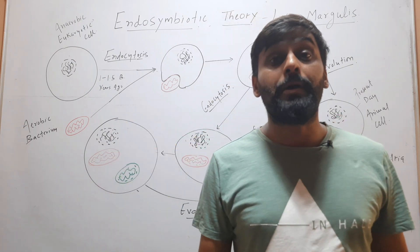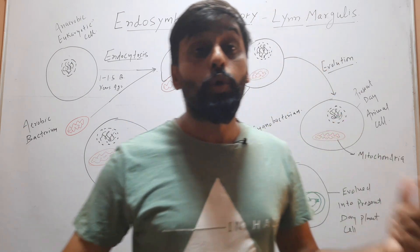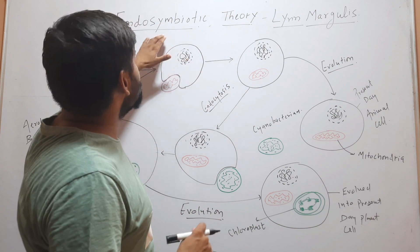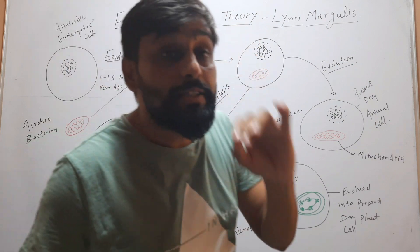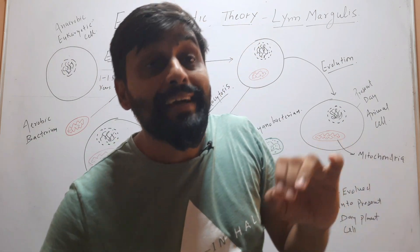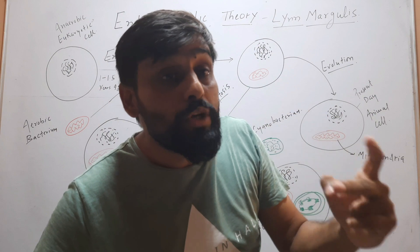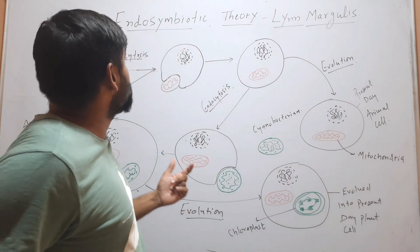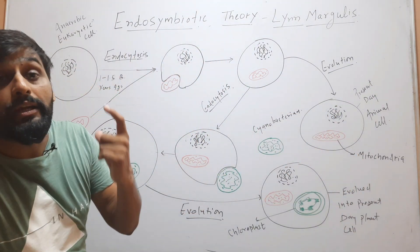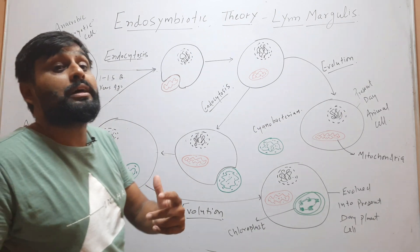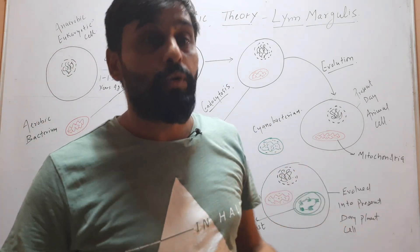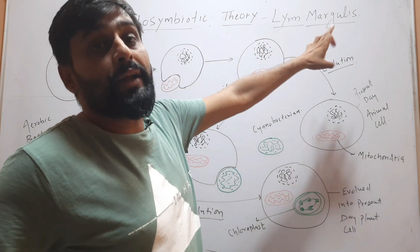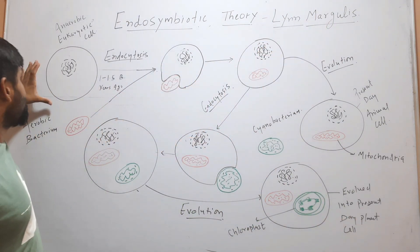Hello friends, welcome to my YouTube channel Dr. Sam's Biology. In this video we will discuss endosymbiotic theory. This theory tells us how two important organelles of living organisms — mitochondria and chloroplast — originated or evolved. This theory was given by Lynn Margulis.